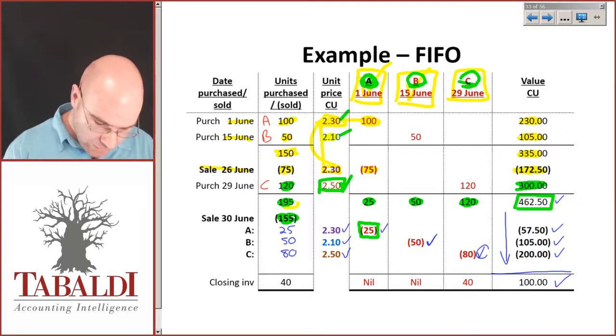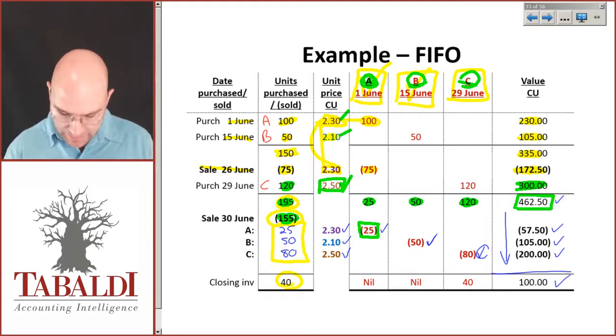And what do I have left on this side? I have 195 minus the 155 gives me 40 items left on hand. And you'll see everything from stockpile A is gone, stockpile B is gone, and we've only got 40 items left from stockpile C, and that is all therefore left at 2.5.